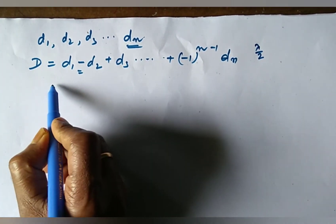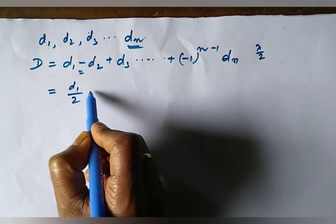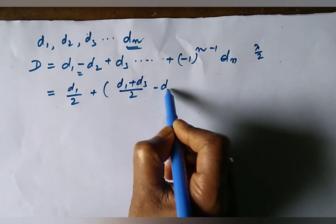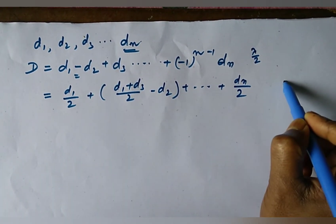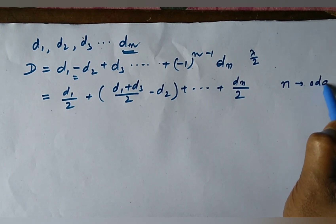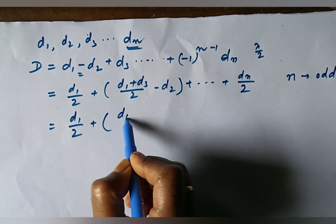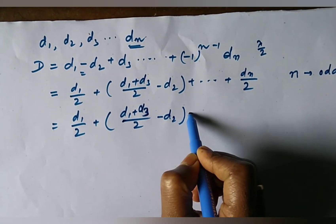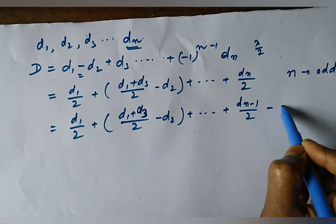Then we may write this in the form, look at this: Dn by 2 when n is odd. Again, we may write this as D1 by 2 plus Dn minus 1 by 2 minus Dn when n is even.